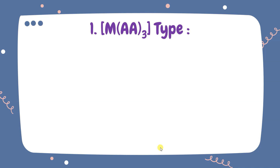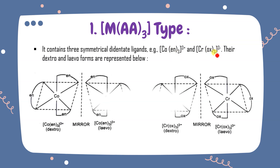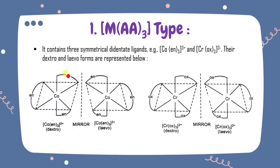For MAA₃ type, for example Co(en)₃ or Co(ox)₃: both are AA type only. Starting with en in the axial position — this arrangement is dextro and its mirror image is levo. Cis-trans isomerism is not possible here because no other arrangement is possible. This type shows only optical isomerism, not geometrical isomerism.